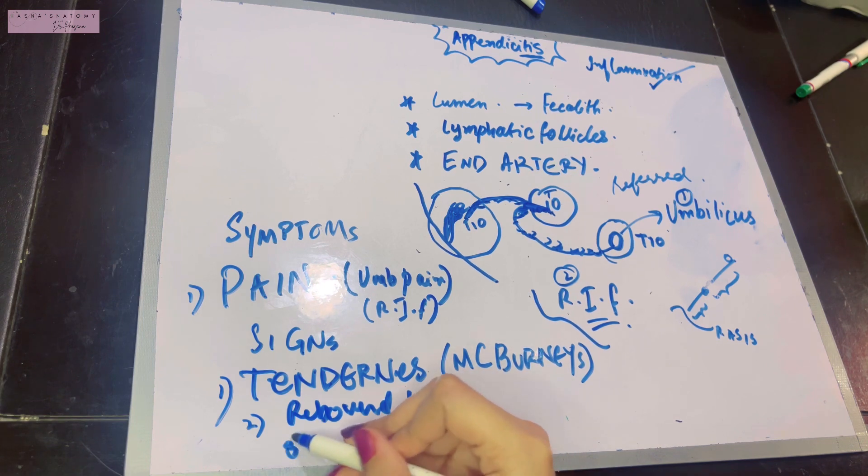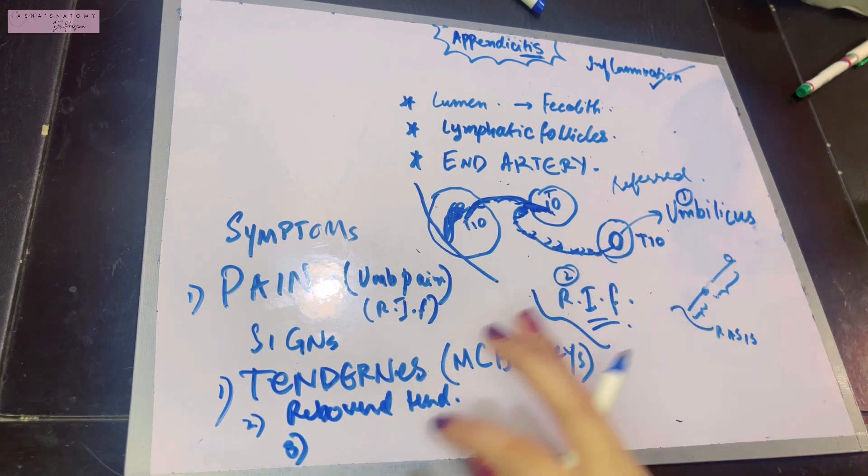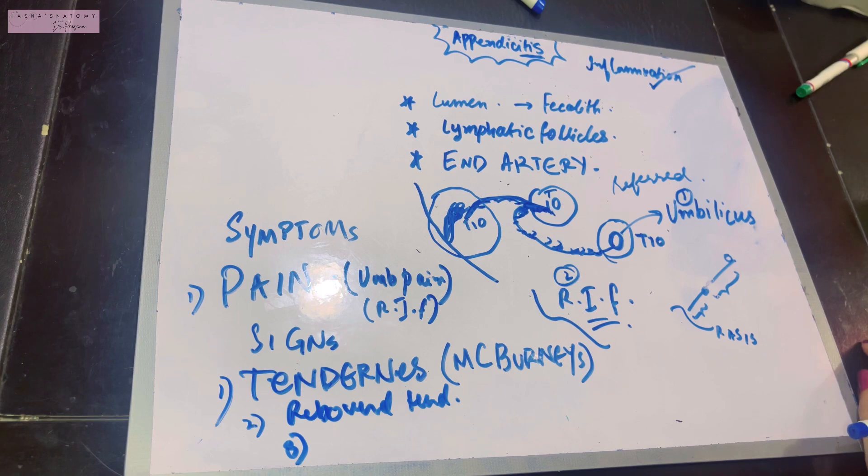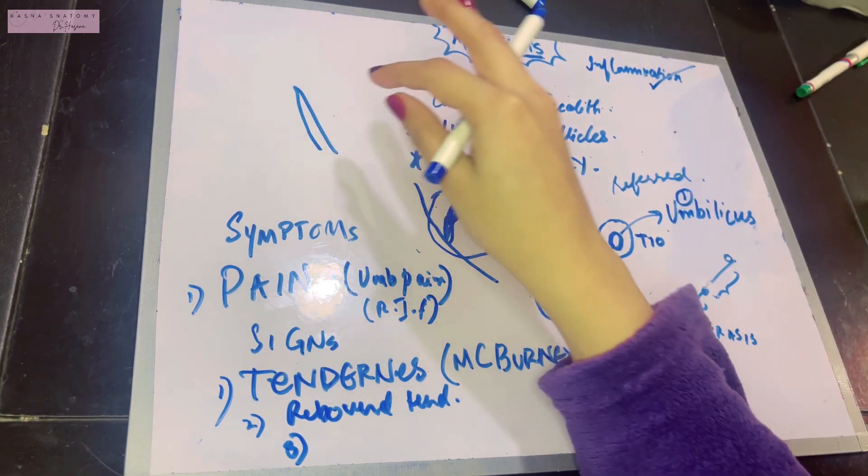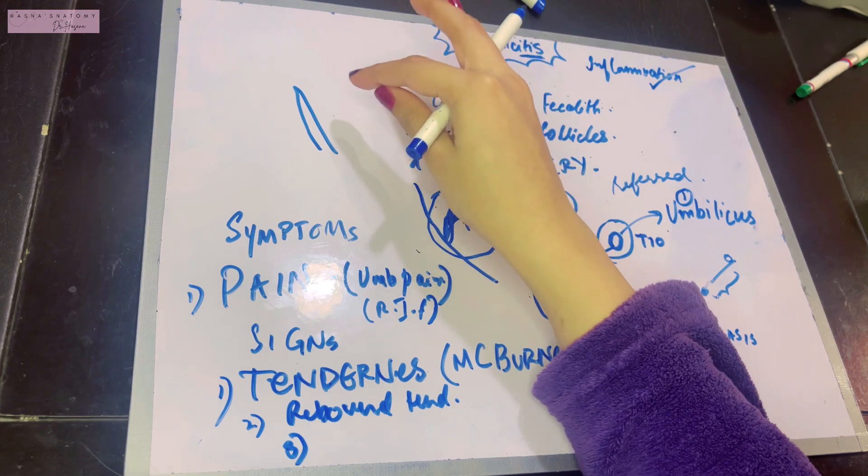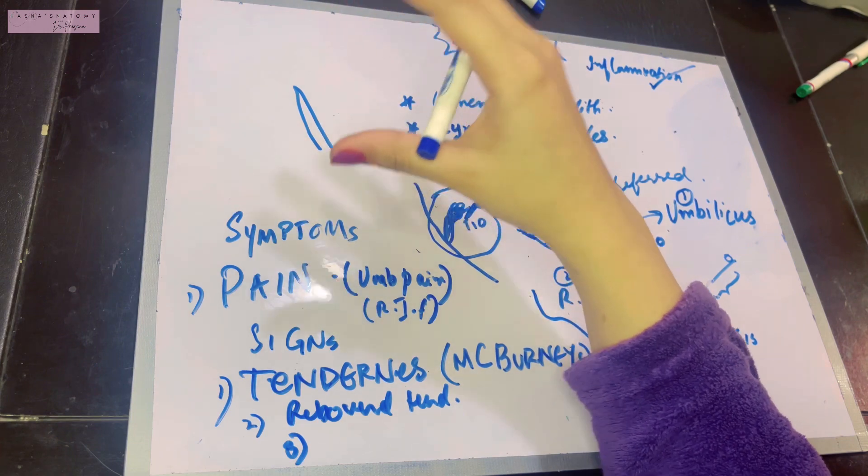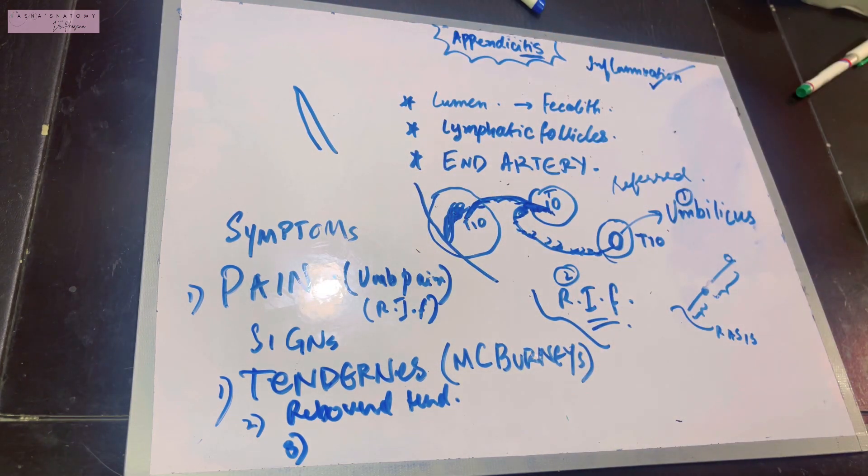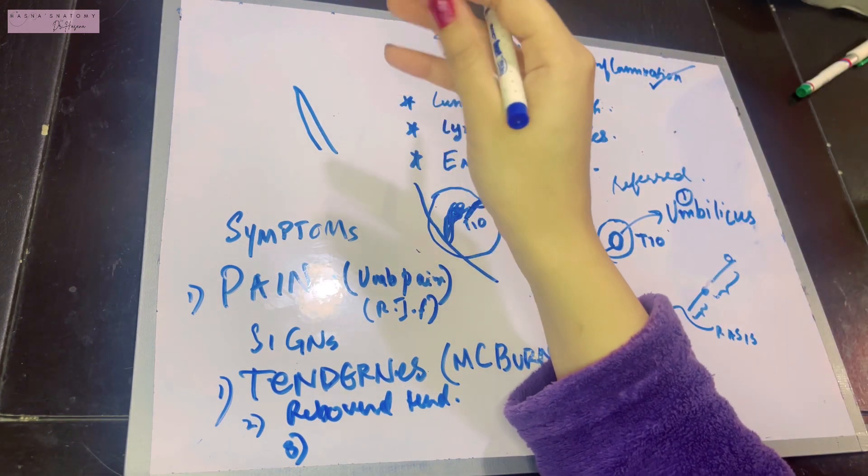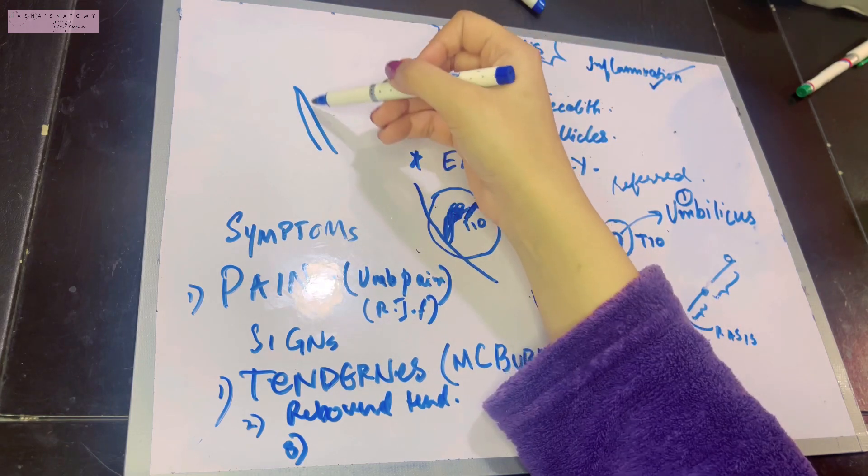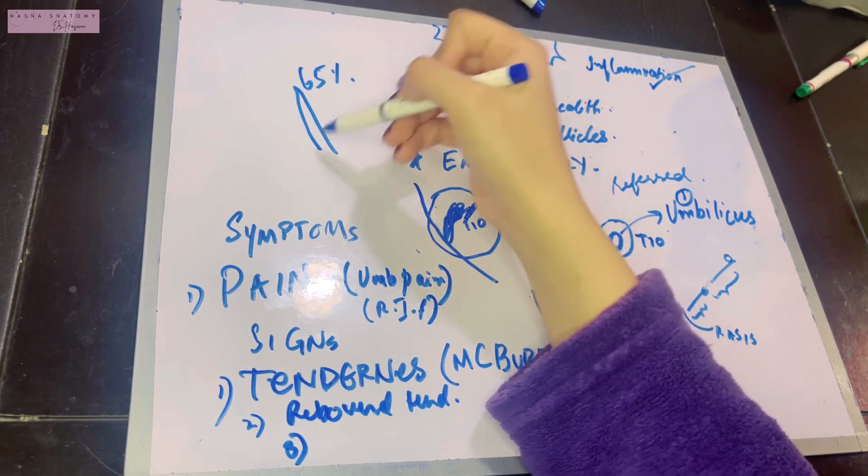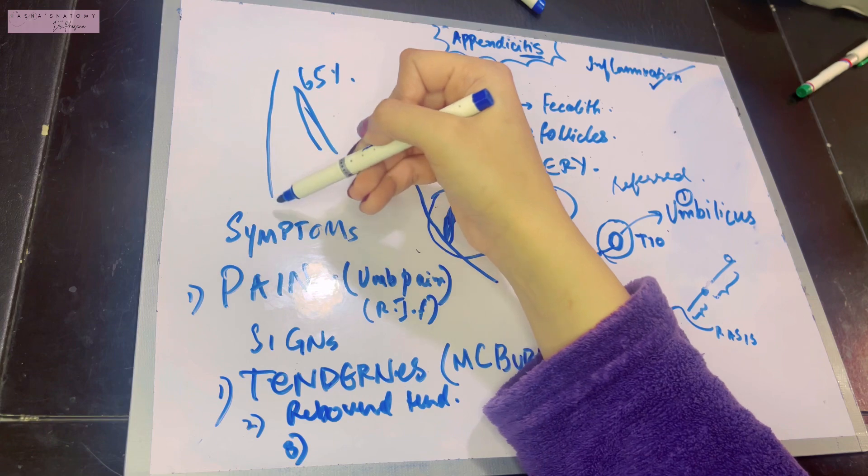The third sign is related to the positions of the appendix. If the appendix is retrocecal, the patient will tell you that when he flexes his thigh, the pain gets better. When you make the patient lie down and extend his thigh or hip joint, the patient will scream of pain. Why? Because the retrocecal appendix is most common and lies directly on your lower back muscle on the posterior abdominal wall.